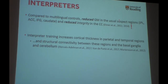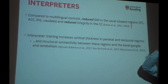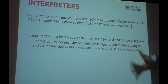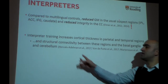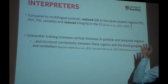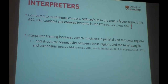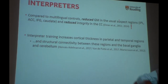When you look at interpreter training — longitudinal studies of trained professional interpreters — they have shown temporal increases in cortical thickness in parietal and temporal regions of the brain, and also increasing structural connectivity between these regions and the basal ganglia, subcortical regions, and the cerebellum. And by increased structural connectivity, I mean more white matter.